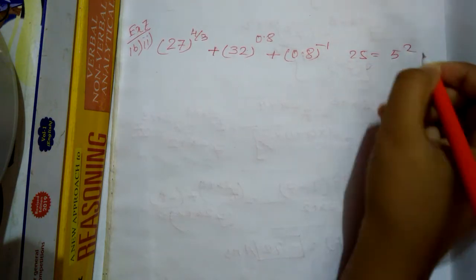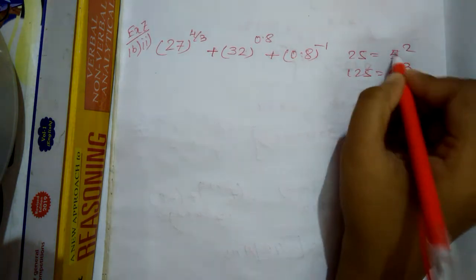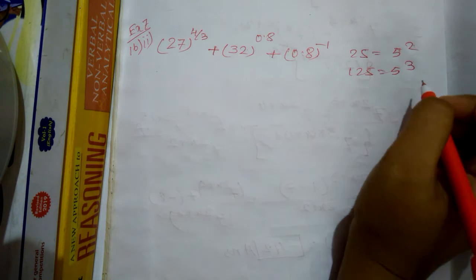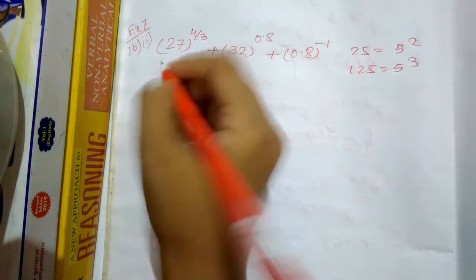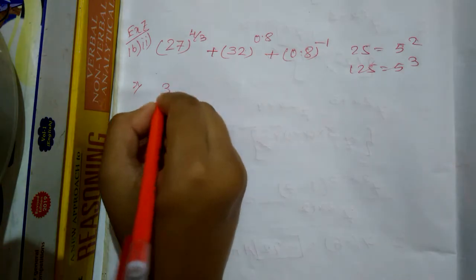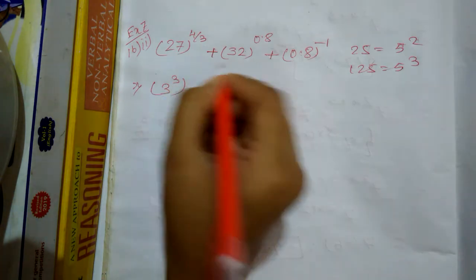This is a simple example. So we are proceeding by converting 27 into 3 cubed.